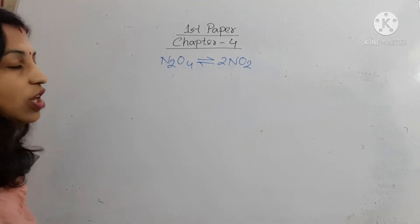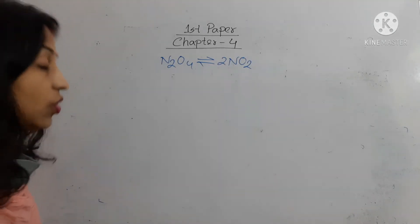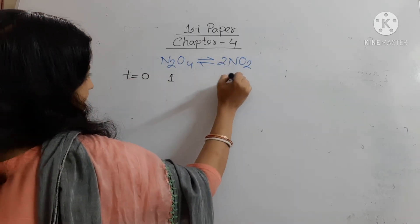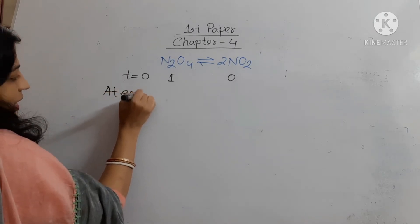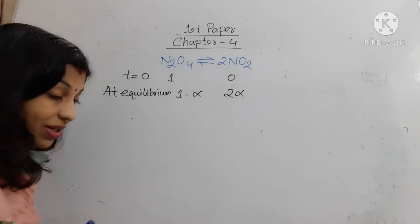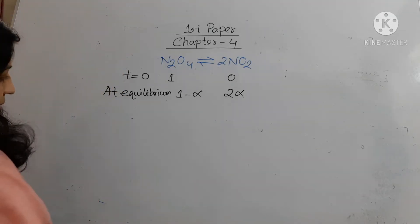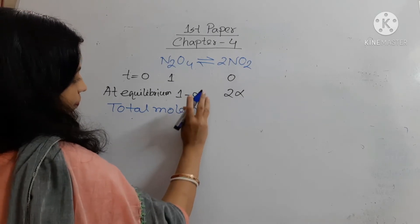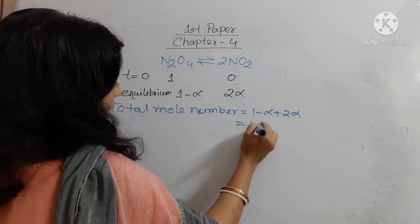To solve this math, first of all, we derive the equation of Kp for this reaction. When time is 0, mole number of N2O4 is 1 and NO2 is 0 because the reaction has not started yet. At equilibrium, N2O4 is (1 − α) and NO2 is 2α, where α is the rate of decomposition. Total mole number equals (1 − α) + 2α = 1 + α.